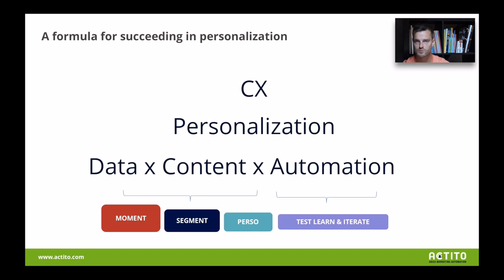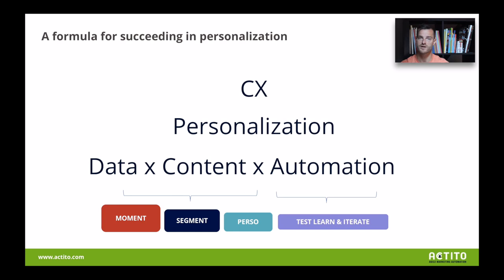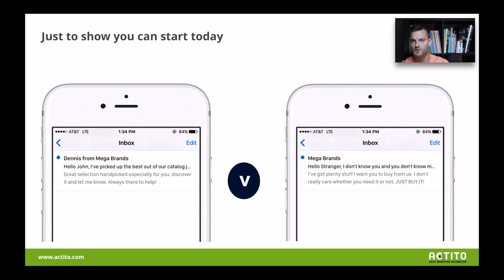A little formula since we're an engineer-driven company: personalization is about data, content, and automation. The moment is exactly what I described with the weather example — slice the weather, look at the segments, the postcodes and people that correspond to that target group, then use the persona — is it more a family or a B2B person? Then go with the test-learn iteration, which is the A/B testing part. There's also a full webinar on personalization on our website if you need more info.